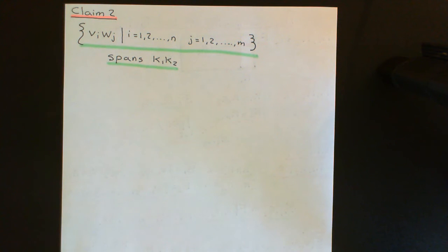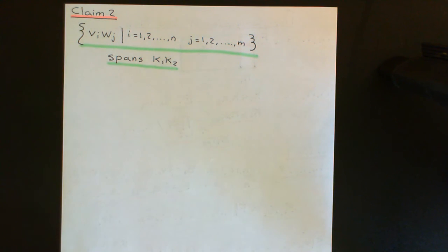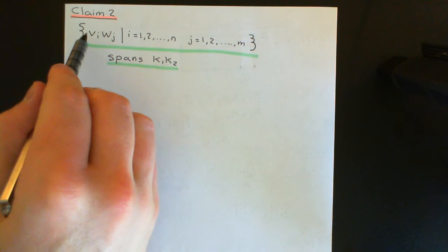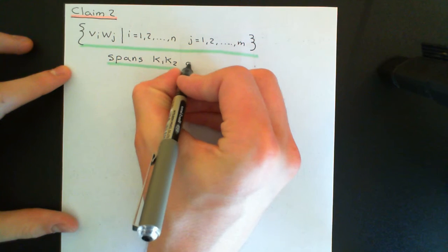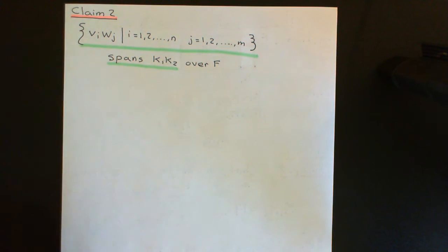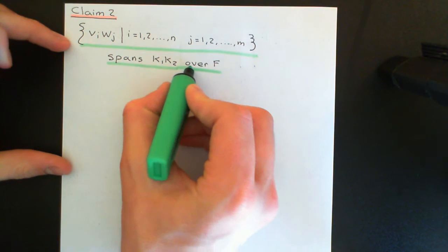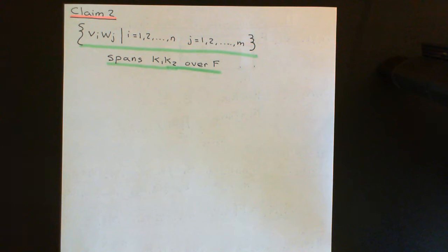This makes sense to multiply these two elements together and get something else that's in capital L. My claim is that this set is going to span the composite of k1 and k2 over F. So F-linear combinations of this are going to span k1k2. I will repeat that I am not claiming this is a basis — it might be, but we're not going to prove that. That's a stronger condition. We're just going to prove that it spans the composite of k1 and k2.